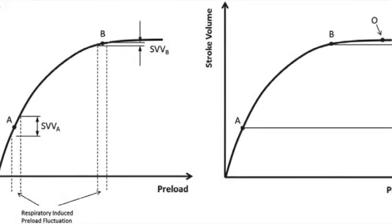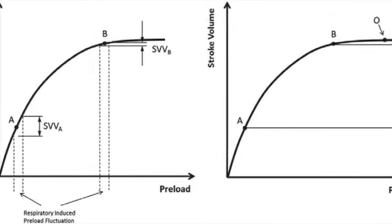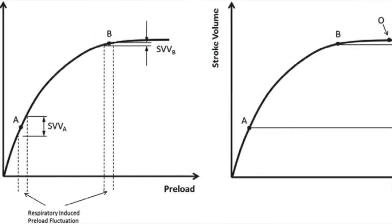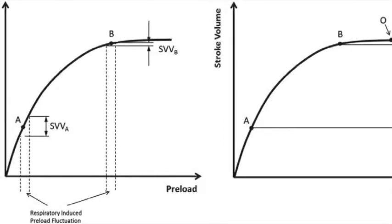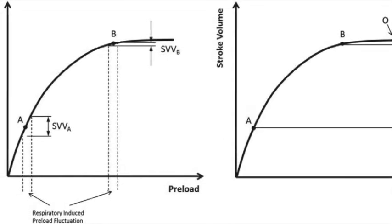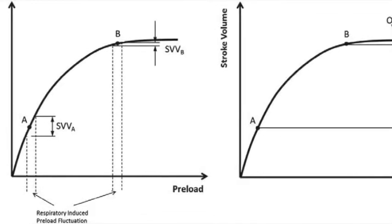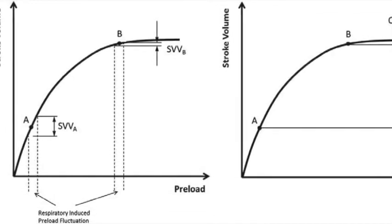It's true that venous return to the right side of the heart is concurrently decreased, so if you maintain positive intrathoracic pressure for more than a few seconds, blood pressure eventually drops. However, the initial response is an increase in blood pressure and cardiac output from the increased return from the lungs to the left atrium.